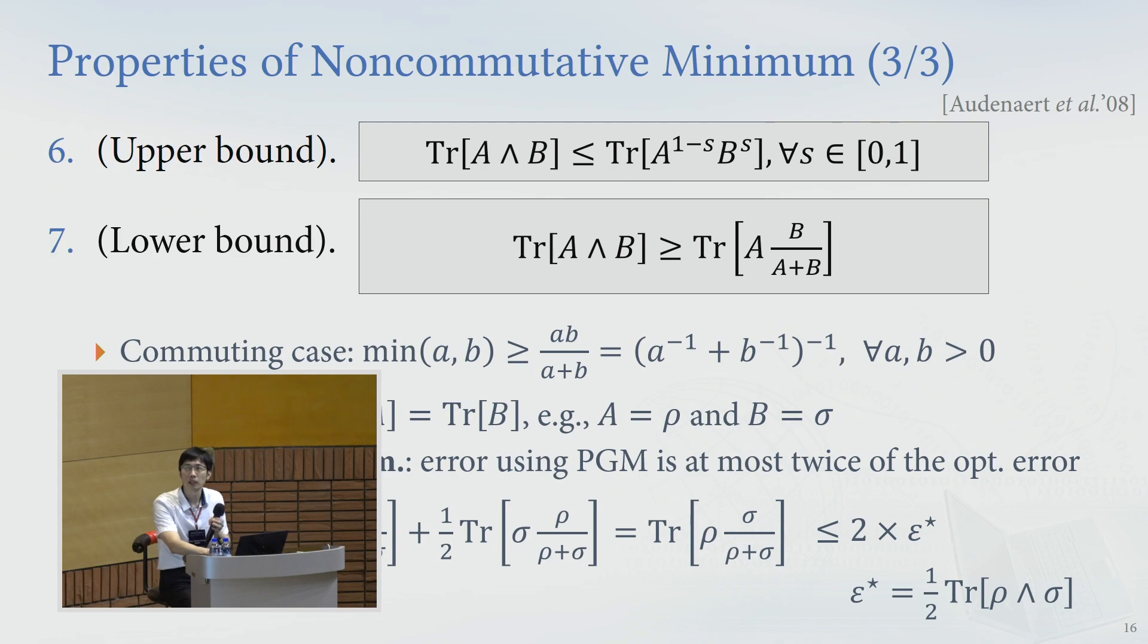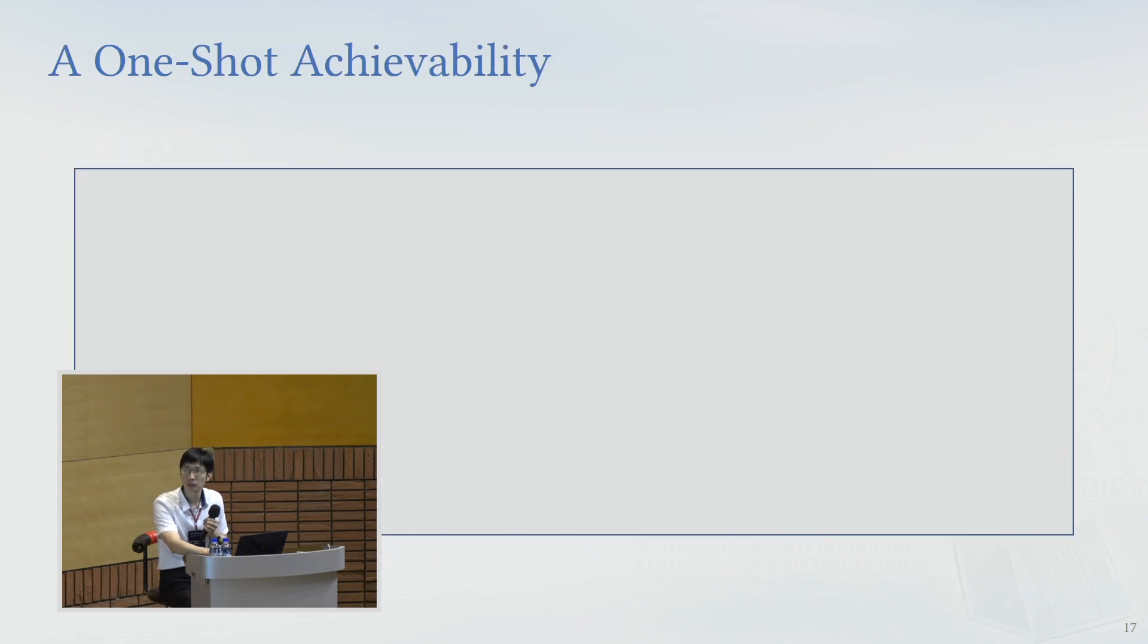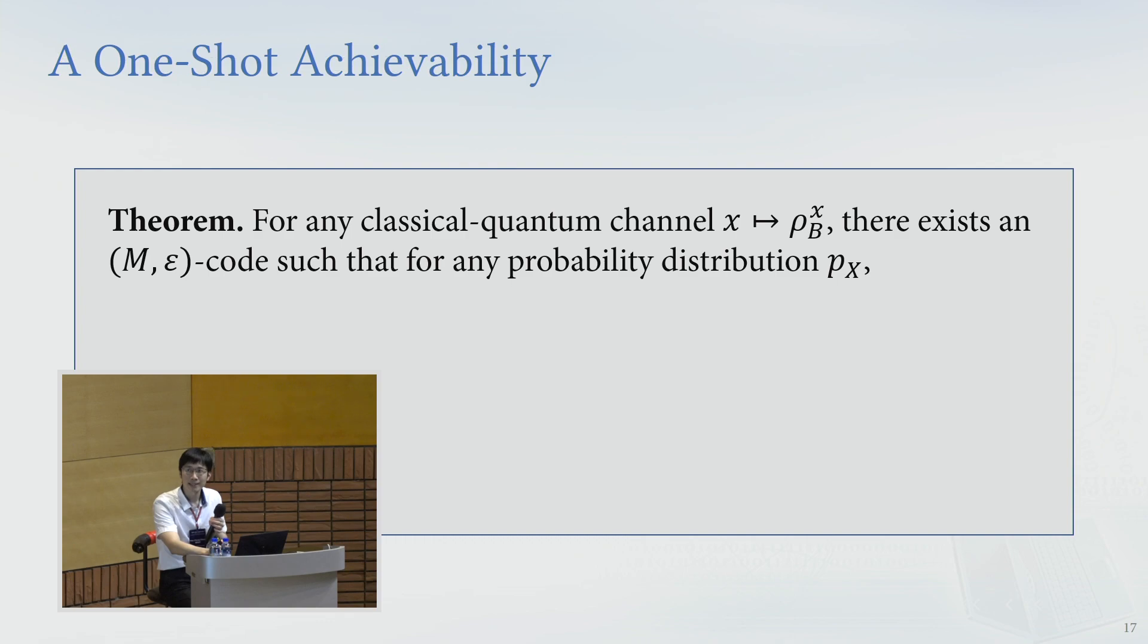Okay, so that's the basic properties for non-commutative minimum. Let's go to the main theorem in this talk, a one-shot achievability bound. So the main theorem says that for any classical quantum channel like this, there exists an M-epsilon code, meaning that we want to send capital M messages and to achieve an epsilon error probability.